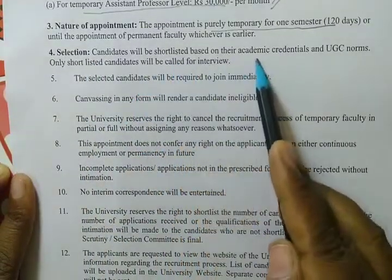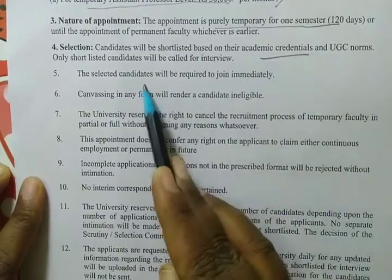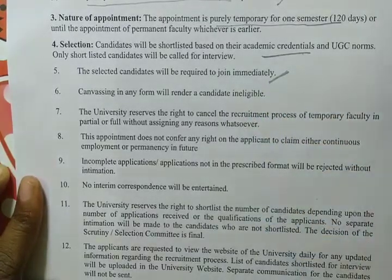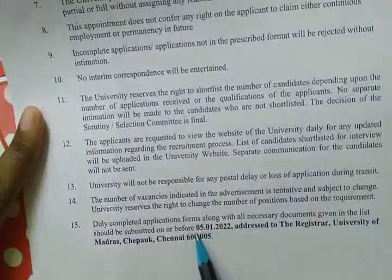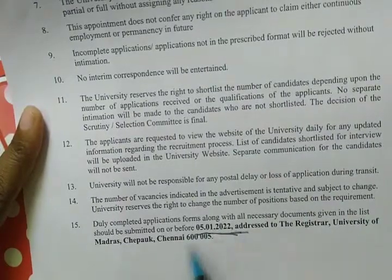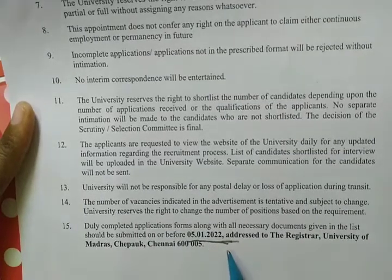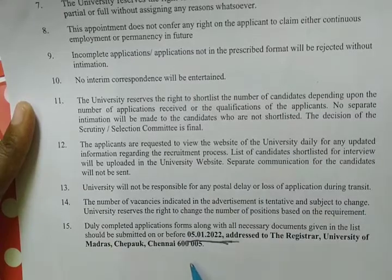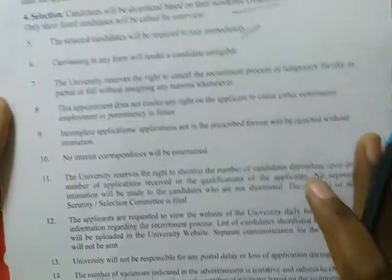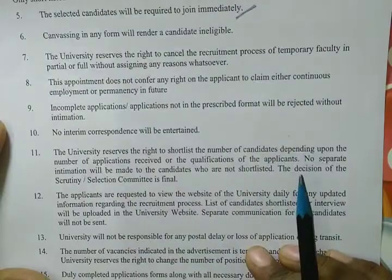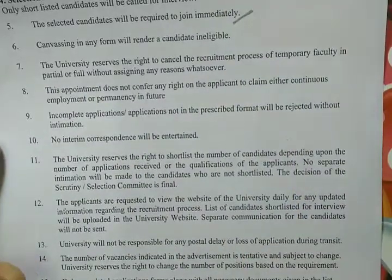For eligibility B: the PhD must have been obtained from a foreign university or institution, and that institution should be among the top 500 in the world university ranking at any time.